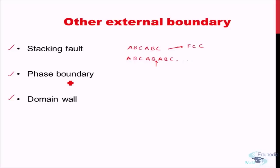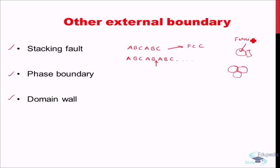A phase boundary differs from a grain boundary in that while grain boundaries separate different grains of the same phase, a phase boundary separates two grains belonging to different phases. For example, in steel, ferrite (alpha iron) is one phase and cementite (Fe₃C) is another phase. The region boundary separating two different phases is known as a phase boundary.